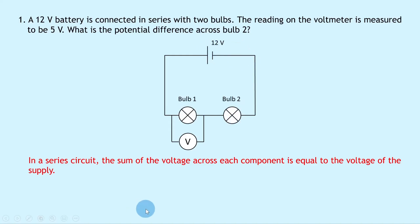We can write this in symbol form as Vs (the supply voltage) equals V1 + V2 + ... So we have 12 = 5 + V2, and V2 is what we're trying to find - the voltage across the second bulb. All I need to do is take 5 away from 12 and I get V2 equals 7 volts.